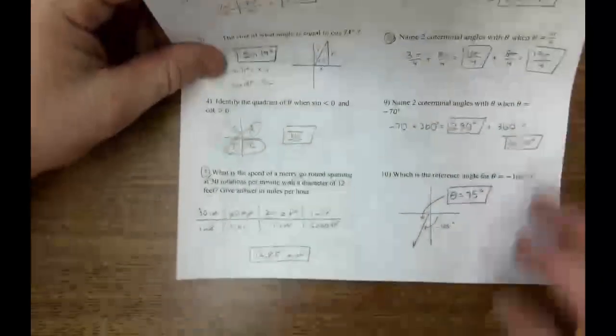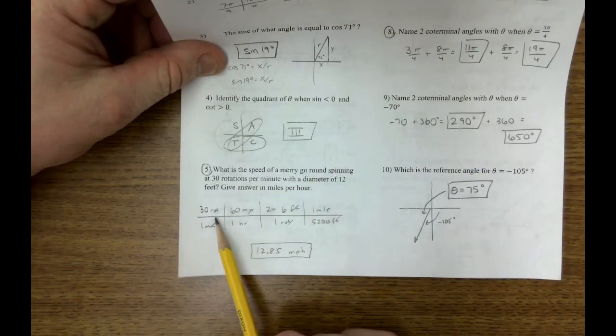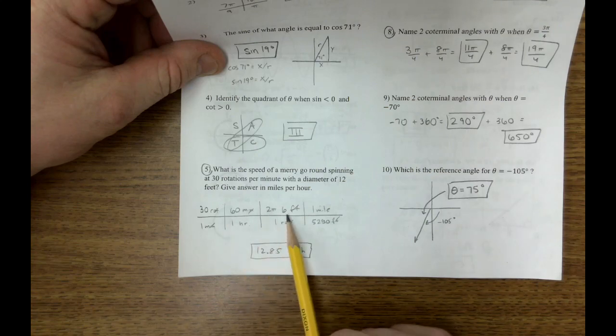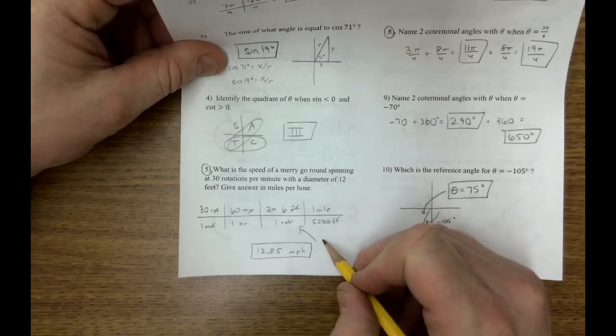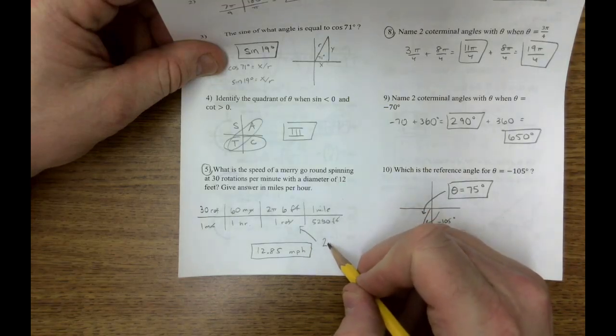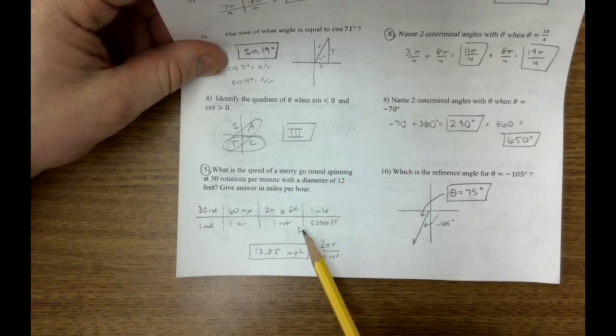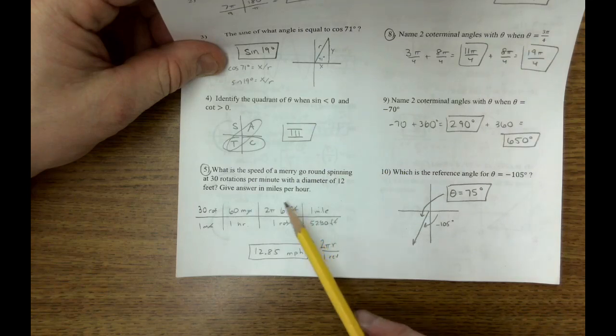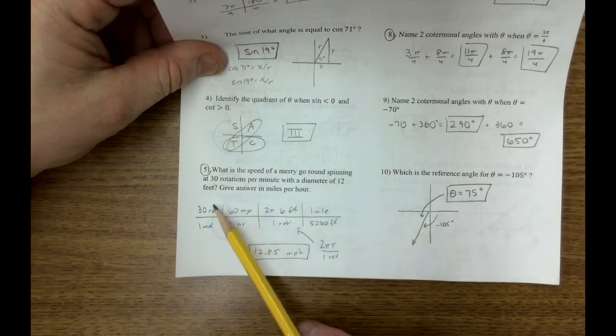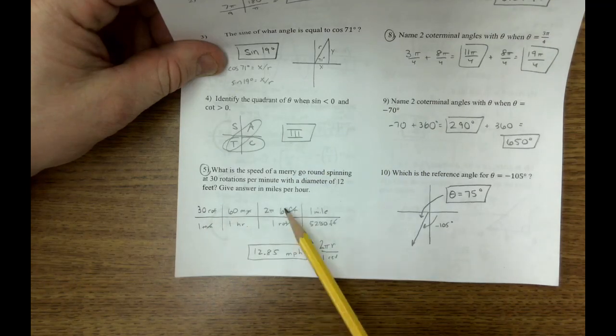First off, number five, speed of a merry-go-round. We're going to start with the speed, 30 rotations in a minute, and you can switch from minutes to hours. And right here is the key. This conversion factor says 2 pi r is one revolution. A revolution and a rotation are the same thing, and a radius and a radian are the same thing. So this conversion factor switches from angular speed to linear speed. Just make sure you have that one in there.